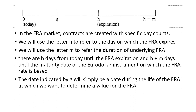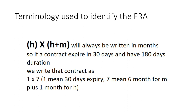The first thing to understand for pricing and valuation of FRA is the terminology. The FRA is identified as H into H plus M, where H is the expiry of the contract and H plus M is the total contractual days. We always write the FRA notation in months, but questions usually appear in days, so we convert each 30 days into one month.